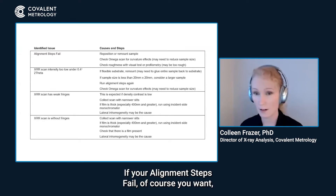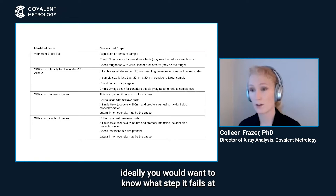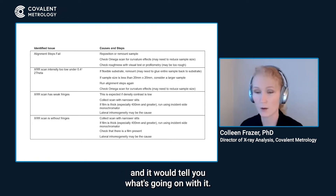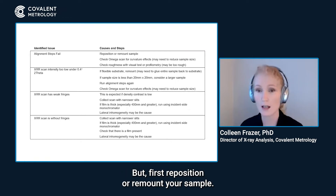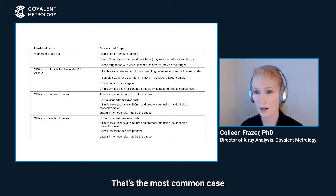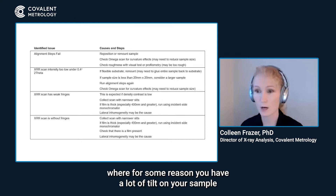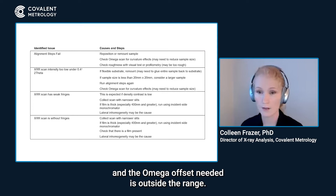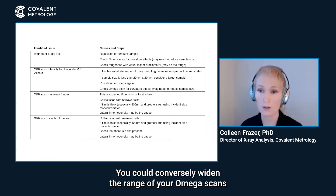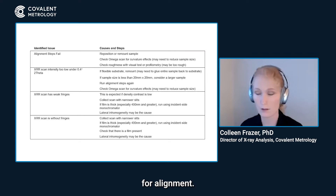If your alignment steps fail, ideally you would want to know what step it fails at and it would tell you what's going on. First, reposition and remount your sample. That's the most common case where you have a lot of tilt on your sample and the omega offset needed is outside the range. You could also widen the range of your omega scans for alignment.